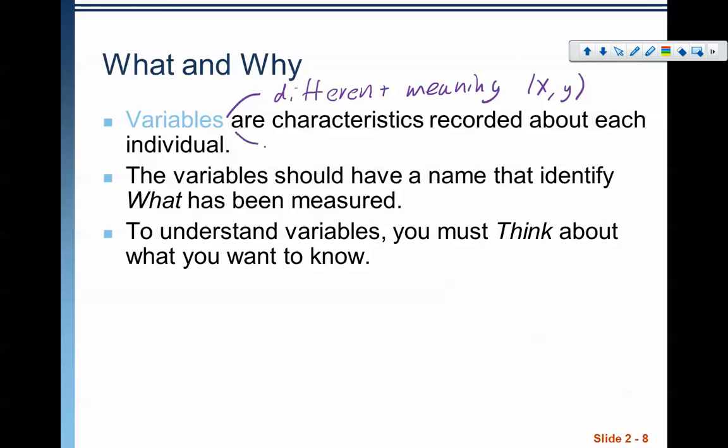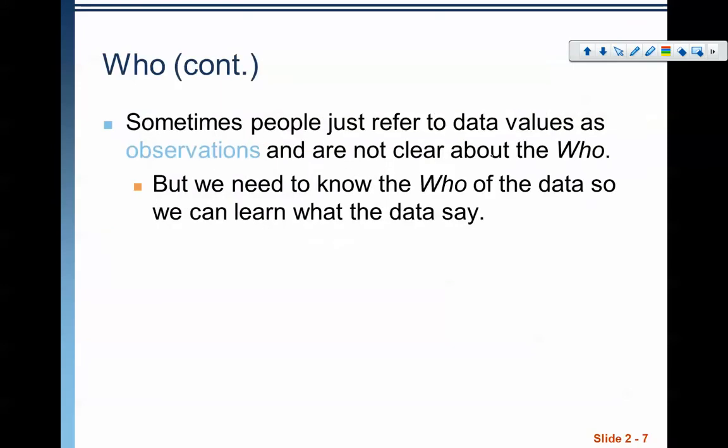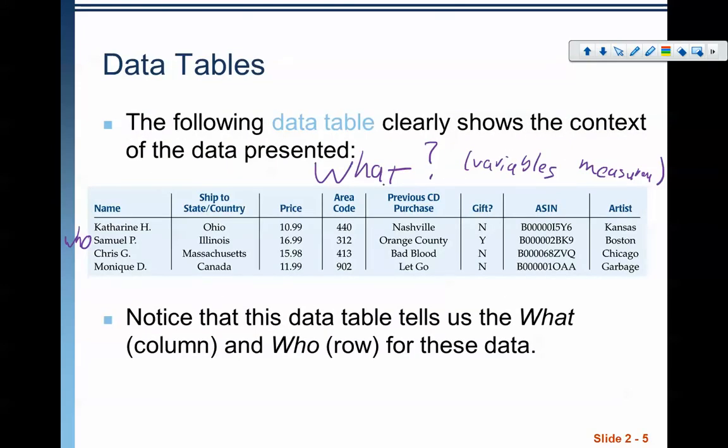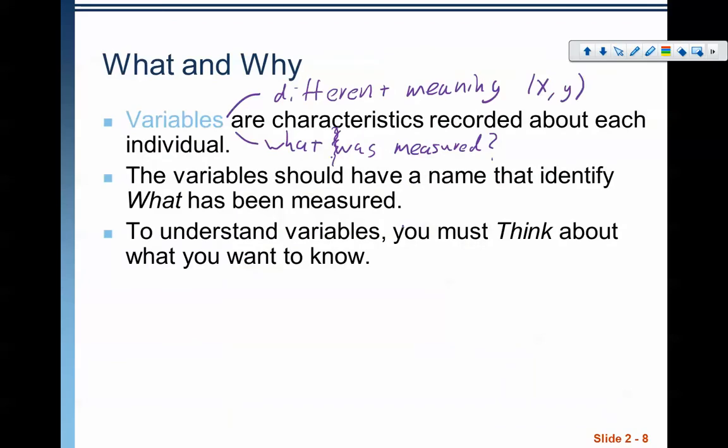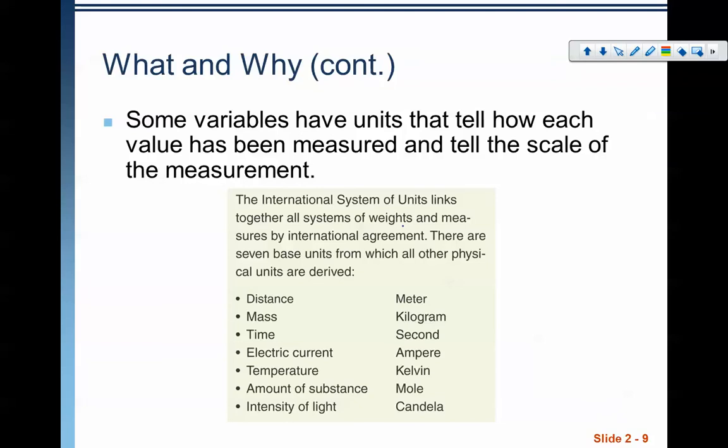In algebra and advanced algebra, precalculus, a variable is like x or y—it's a placeholder for a number or expression. We use it differently here. A variable in this case is really the what. It is what was measured. It gives us an idea. A variable is what was measured from the who. We can have many variables measured for one who. Going back to this data table, we have many variables: ship to state and/or country is a variable, price is a variable, area code is a variable. Notice that not all of these have numbers as answers.